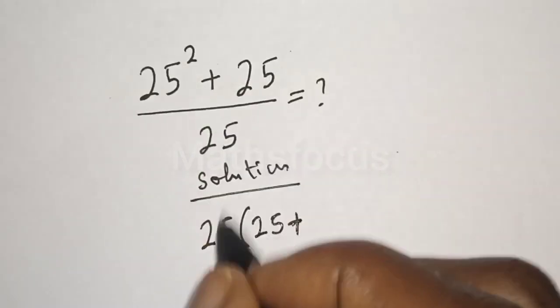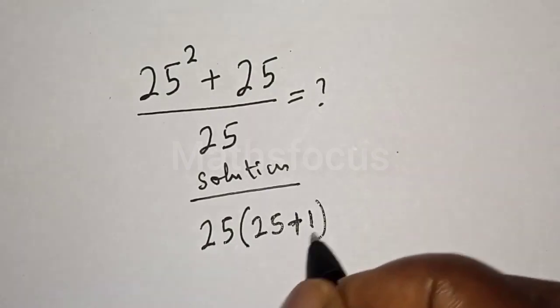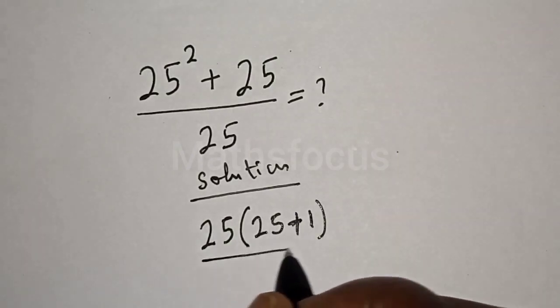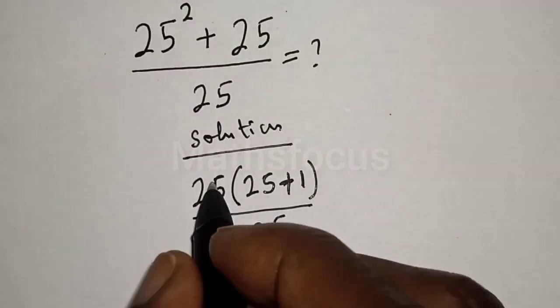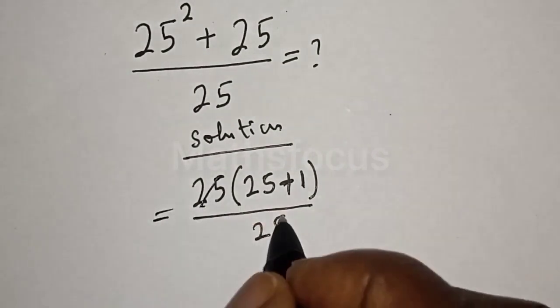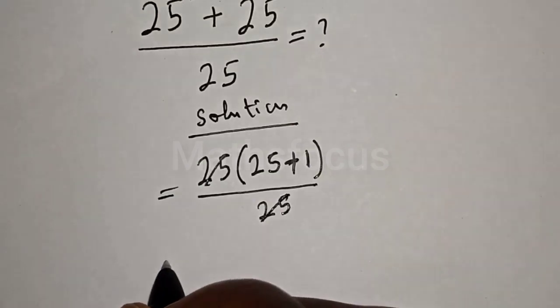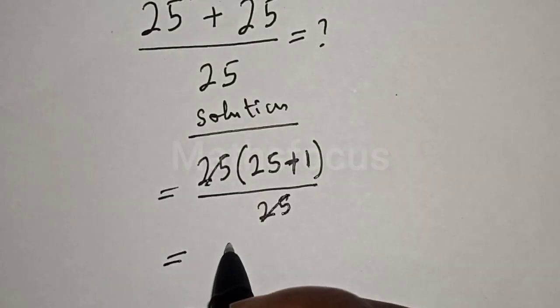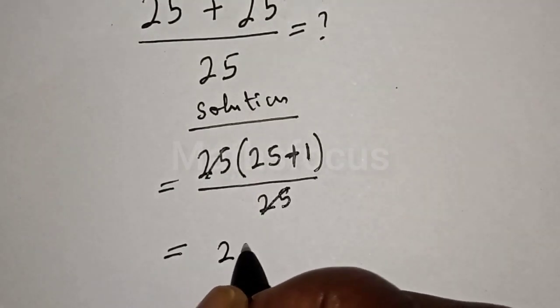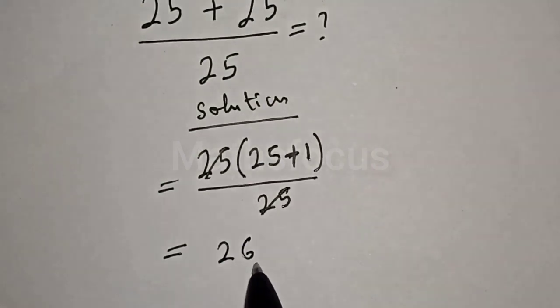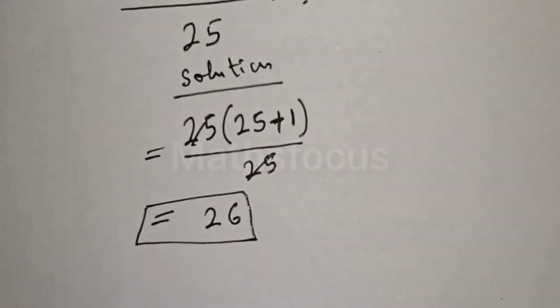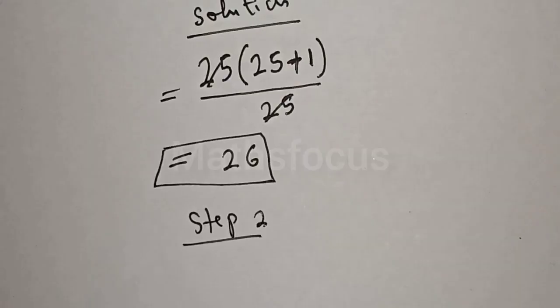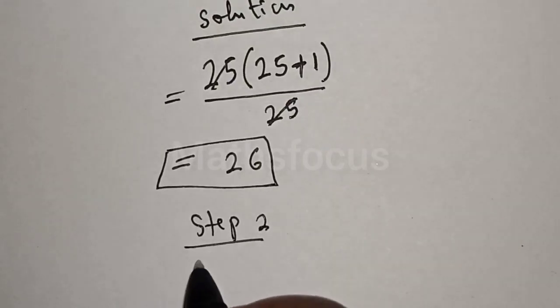Plus 25 in 25, that is one over 25. Then this one will cancel this. This is equal to 25 plus 1, that is 26. And that is our final answer. Or let's solve in another way. Step 2.